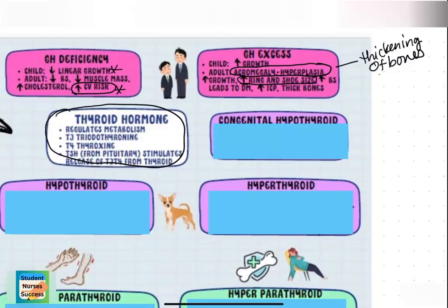We will also see an increase in blood sugar because growth hormone increases blood sugar release from the liver, so individuals with growth hormone excess will start to develop diabetes. This growth can also increase intracranial pressure, causing headaches and related issues.